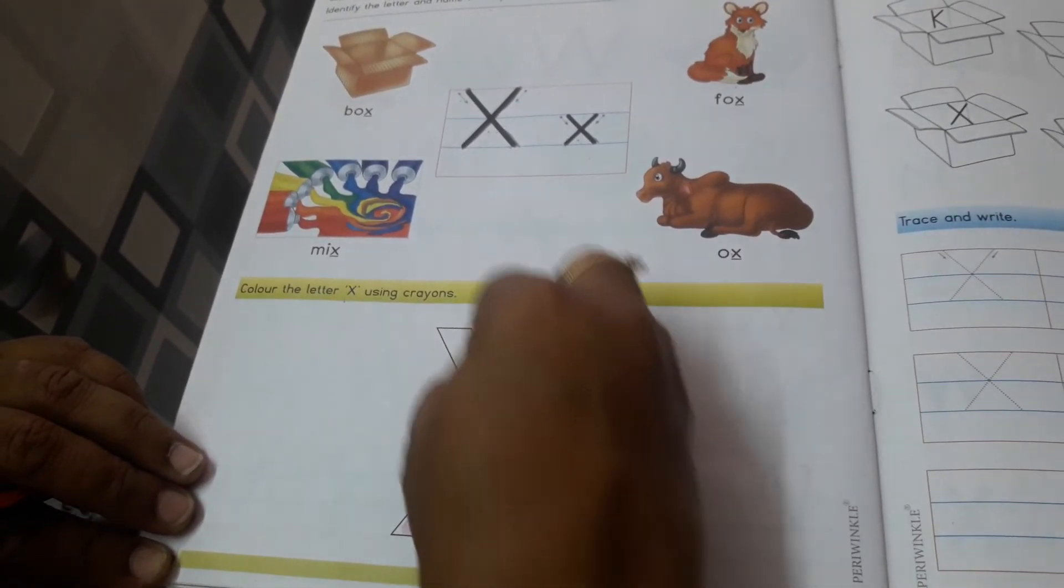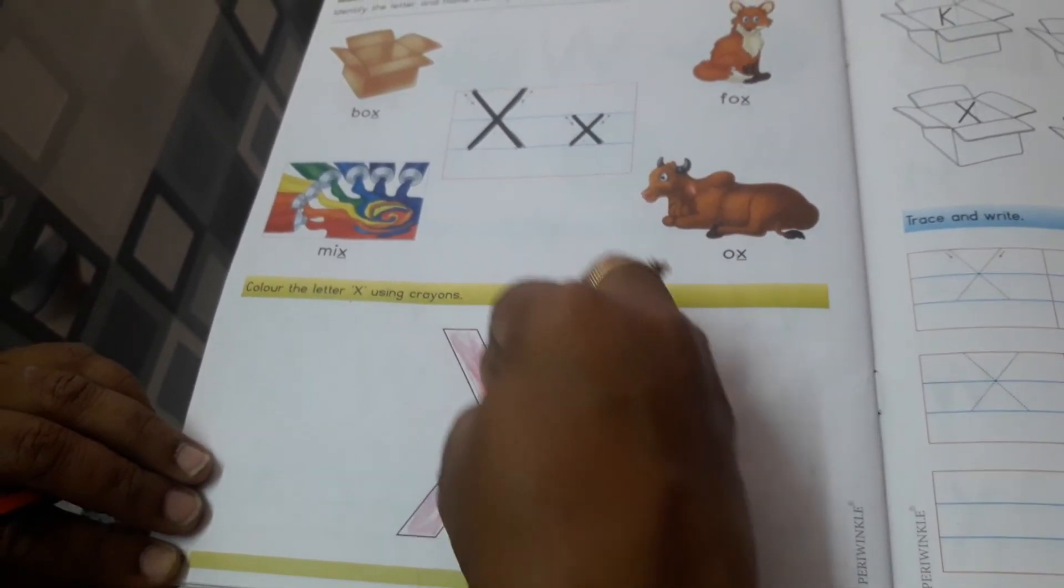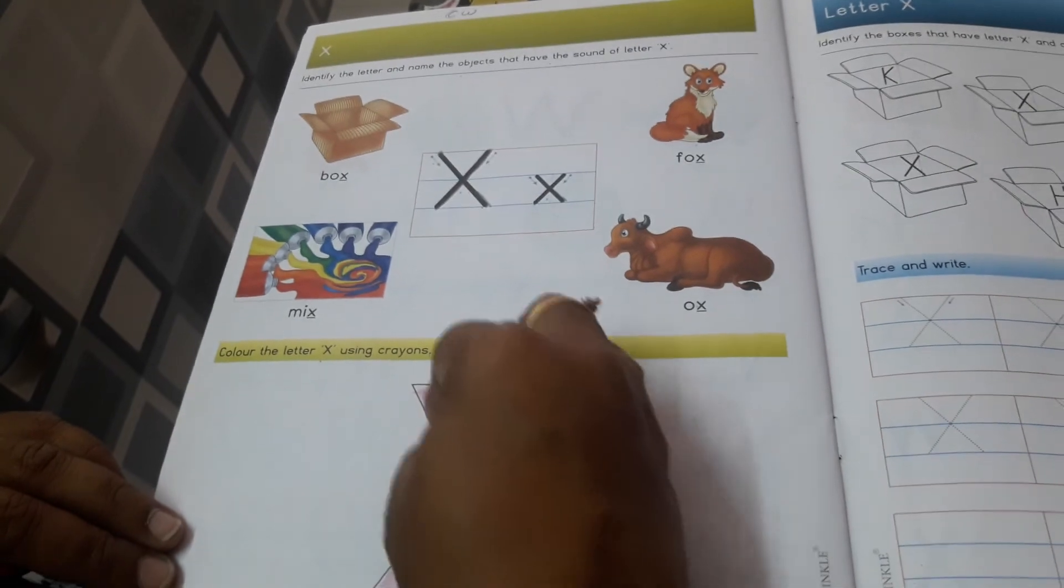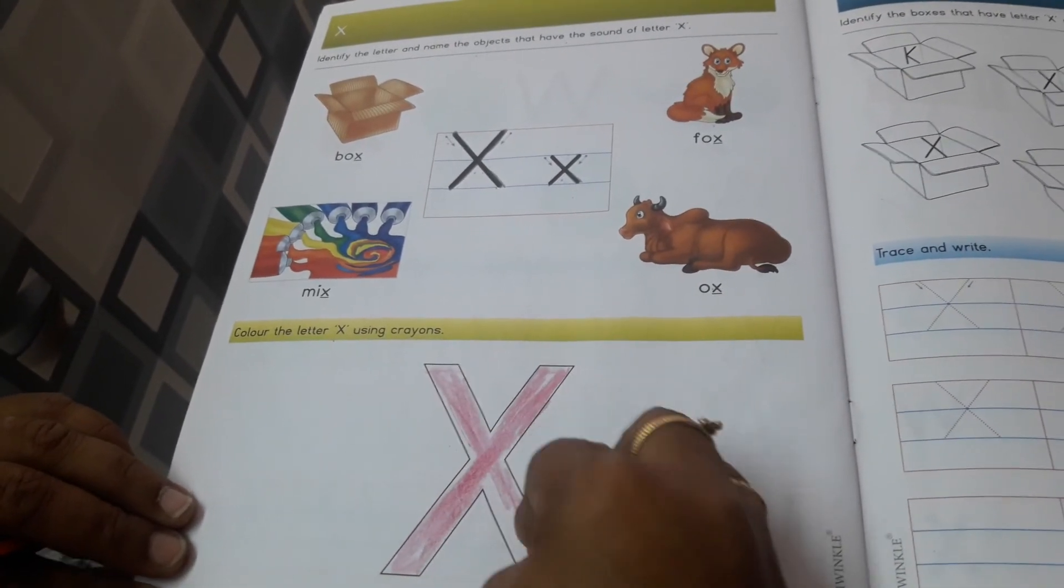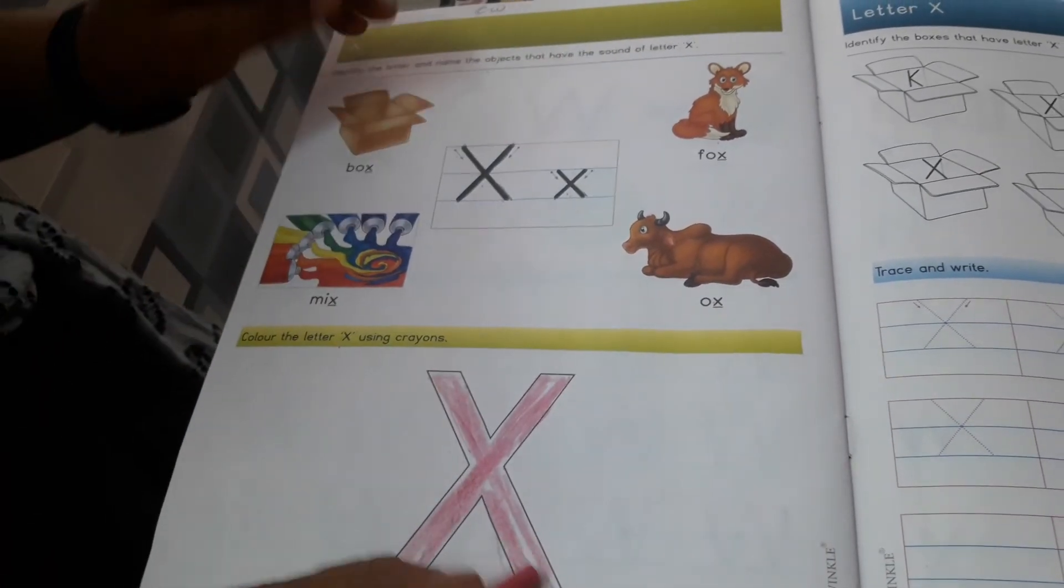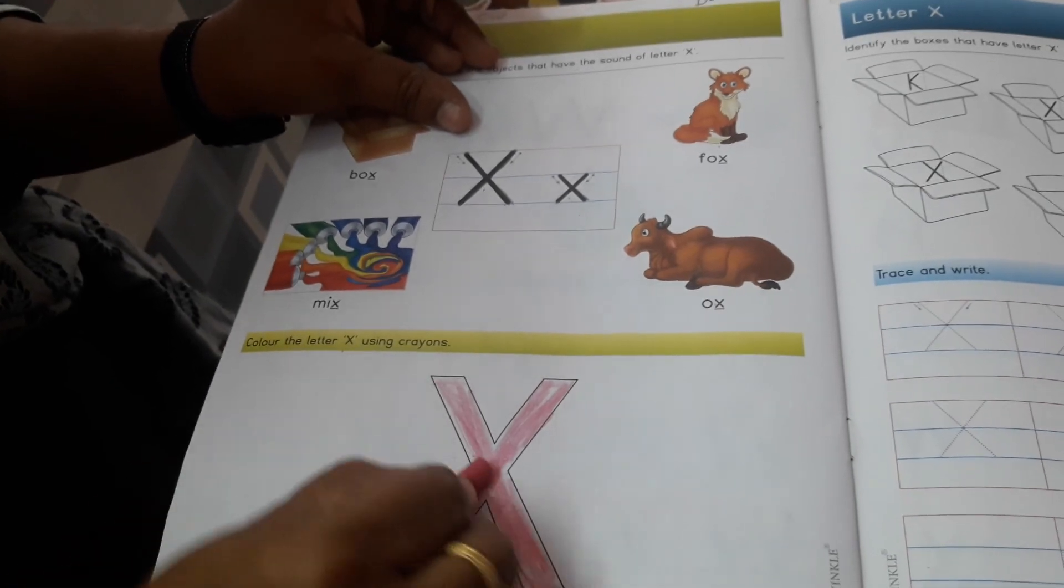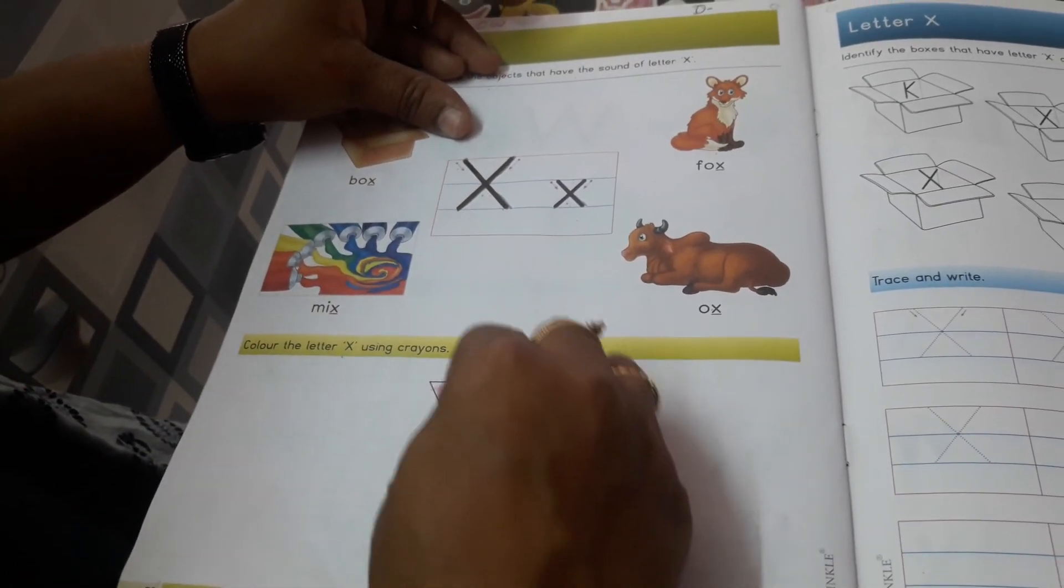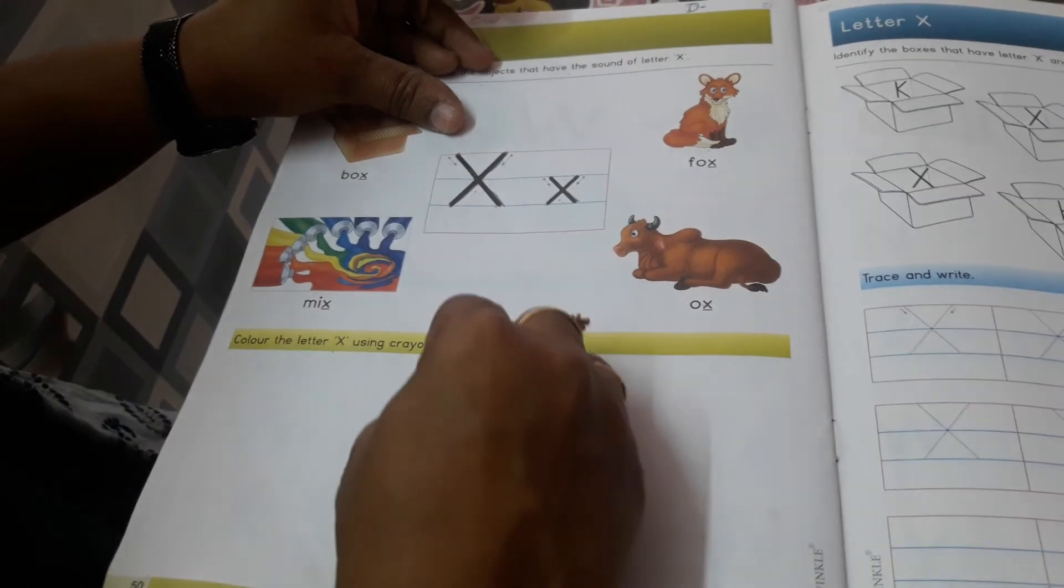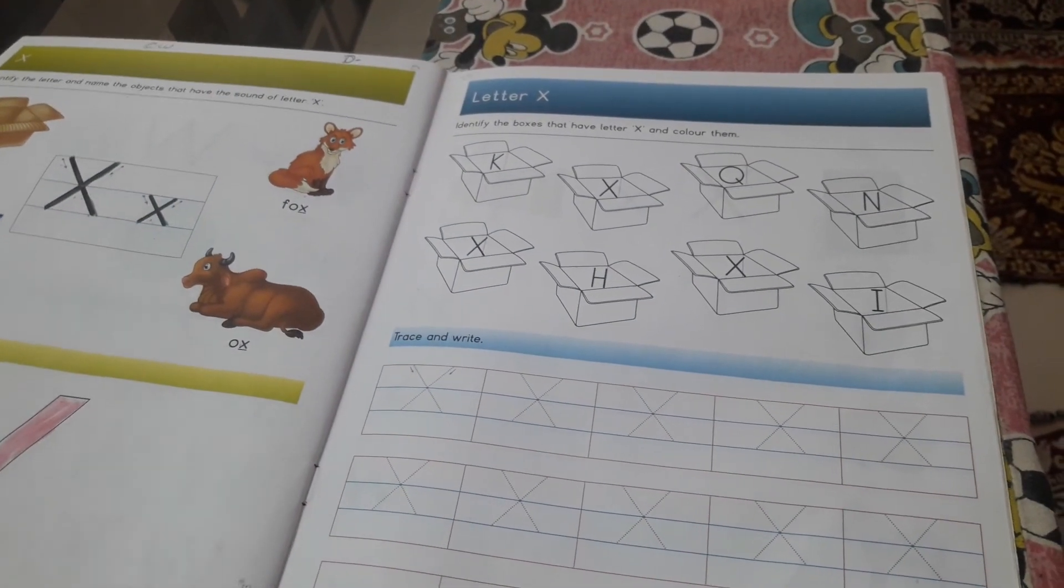X for fox. X for ox. X for mix. X for box. This is our color done. X. This you have to do sitting at home. Okay students, next our video will be letter X. Okay, bye bye.